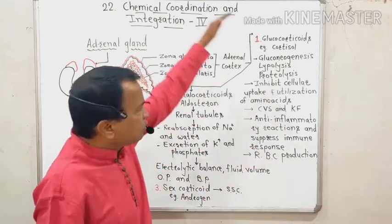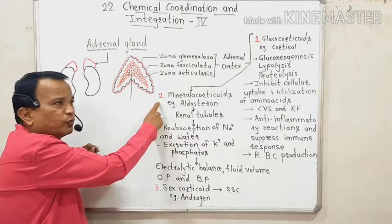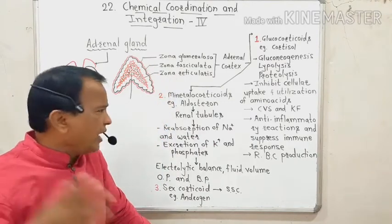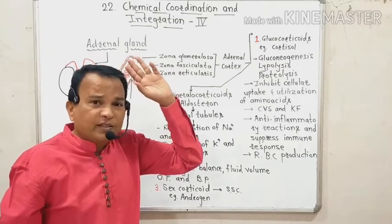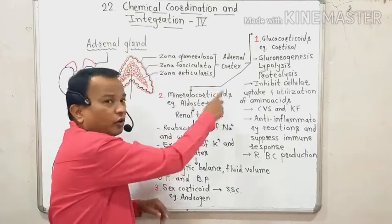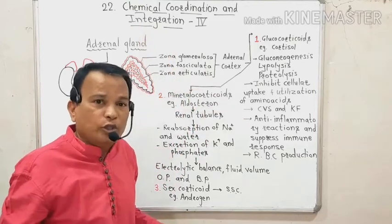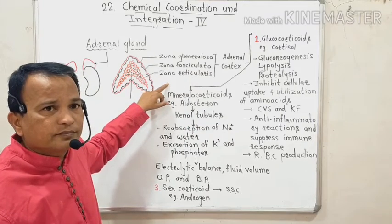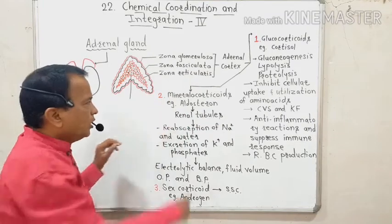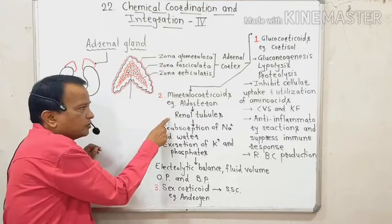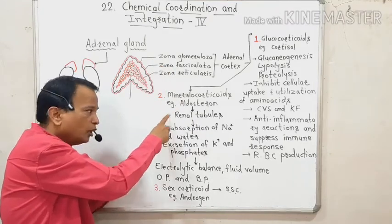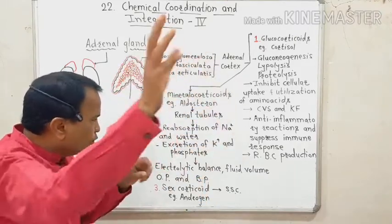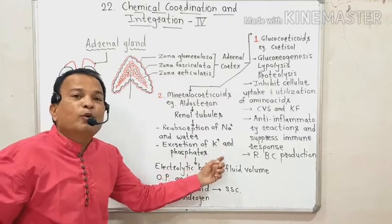The second hormone secreted from the adrenal cortex is the mineralocorticoid aldosterone — which works opposite to ADH. Aldosterone stimulates the renal tubules in the kidney to reabsorb more sodium and water, and to remove potassium ions and phosphate ions, thereby regulating blood pressure in the body.